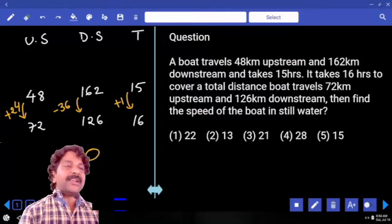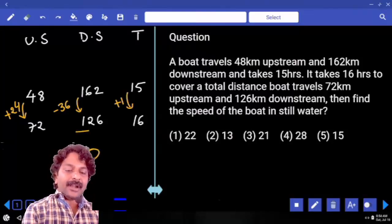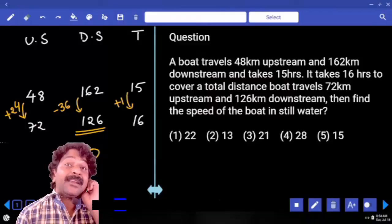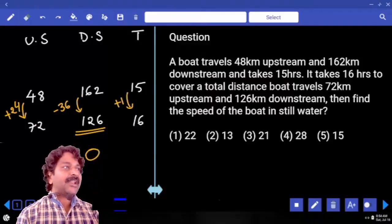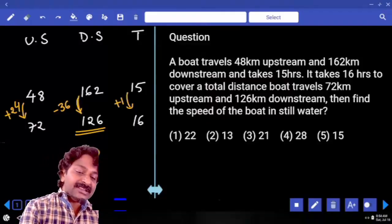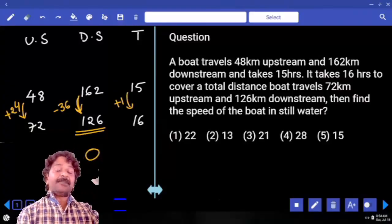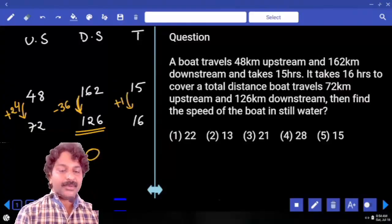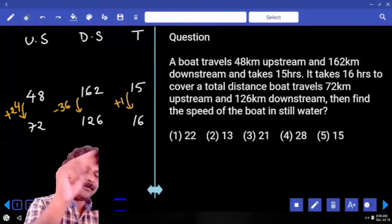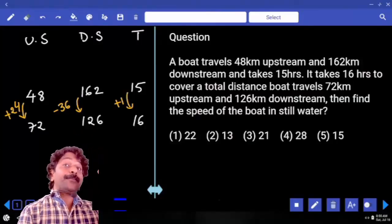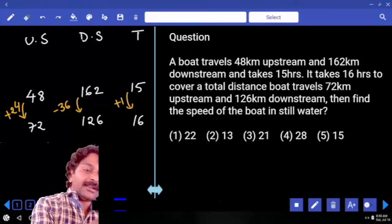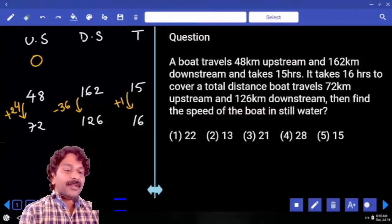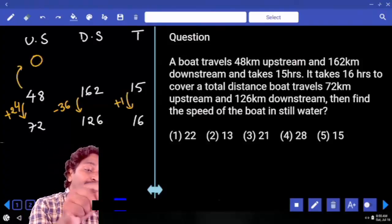Suppose if you want to make it 0, from 126, how much should be subtracted? 126, correct? But what is the difference here? Is 126 direct multiple of 36? So I don't want to make downstream 0. I want to make upstream distance 0. That means, it should come here only. From 48, how much should be subtracted? Which is how many times of 24?